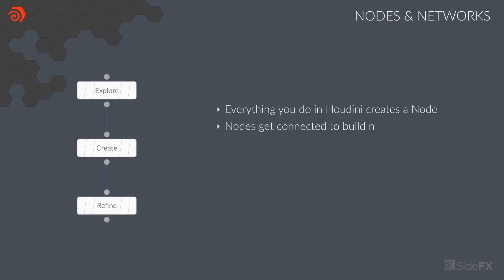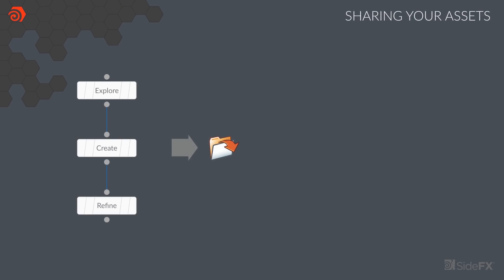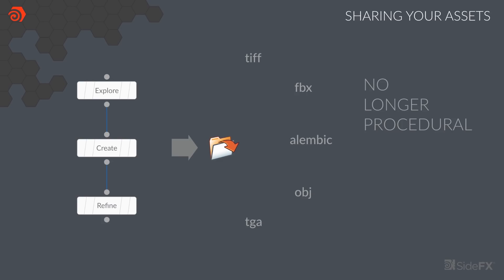These nodes are connected to build networks, and each of these networks defines a recipe or flow of data. These recipes can be used over and over again, and it's easy to share them with your colleagues. Now the traditional way to share your work would be to save out to a common interchange format. You could render or bake out to TIFF or TARGA, or export to an FBX or ALEMBIC file. The issue is that this is no longer procedural and the flow of data in the nodes will be flattened.